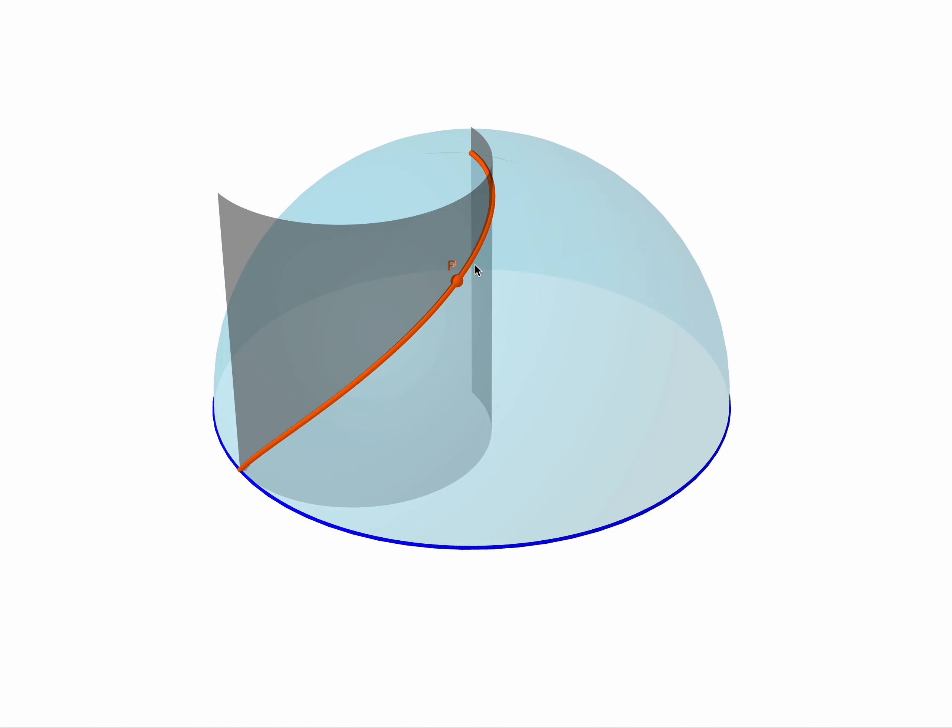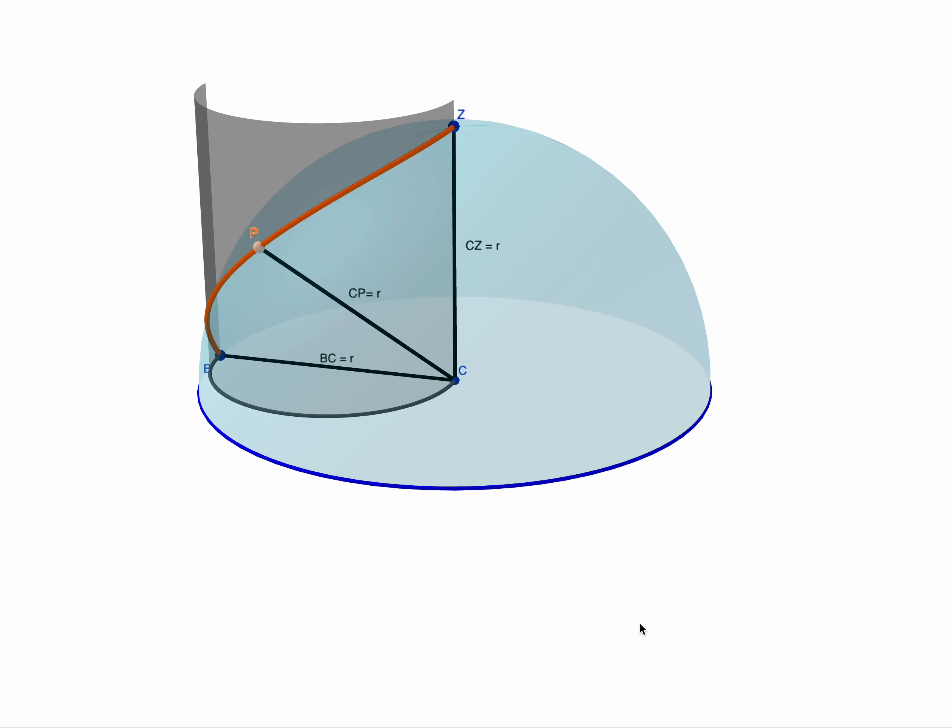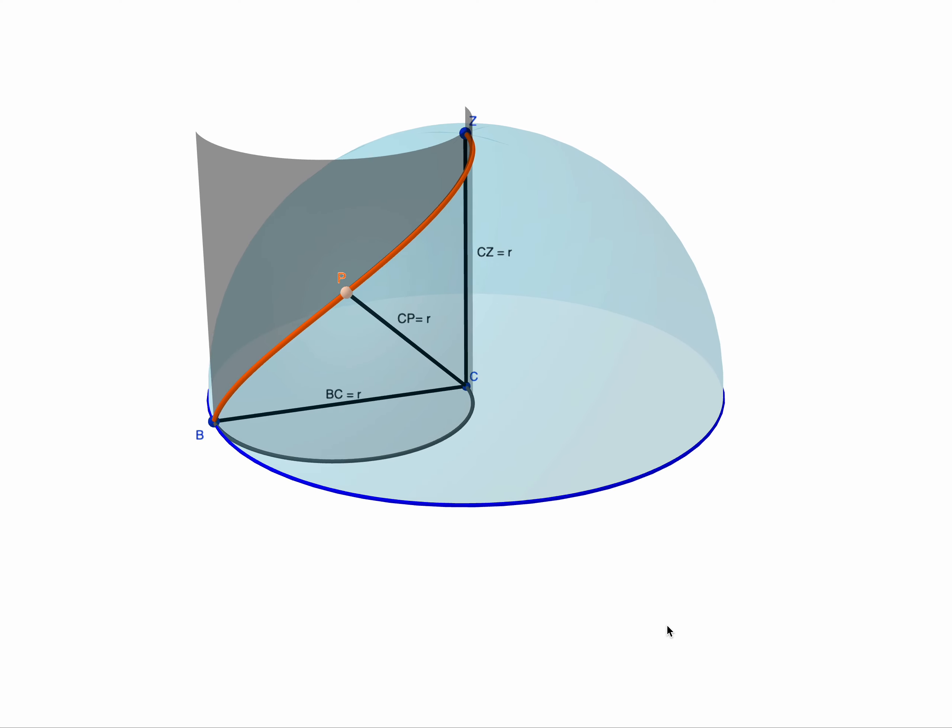So we've got this point P, an arbitrary point on the curve, and what we're going to do is draw some of the radii of the sphere or the hemisphere, so I've marked those in. I've also marked the semicircle on the horizontal plane.